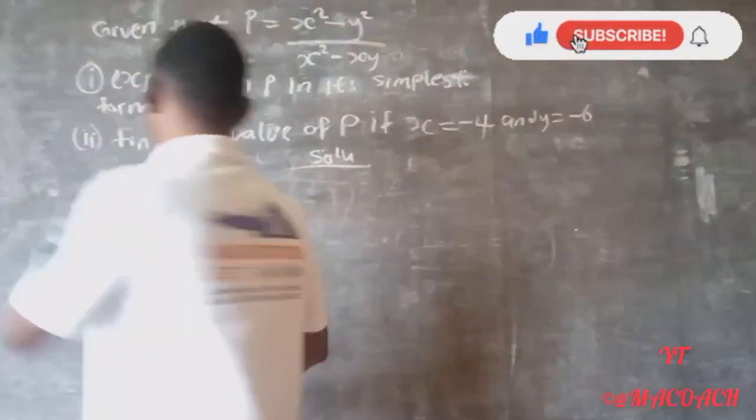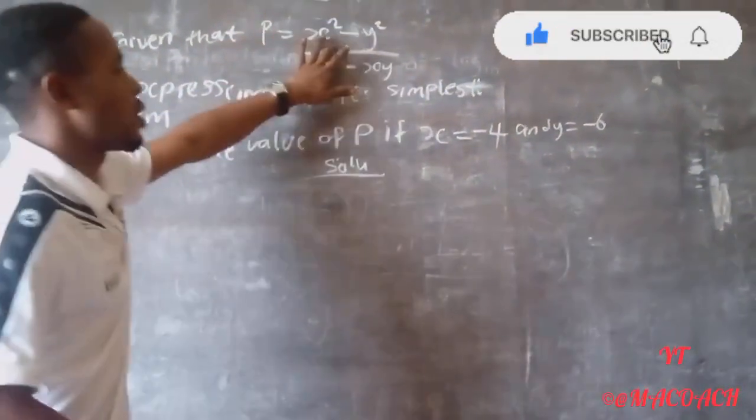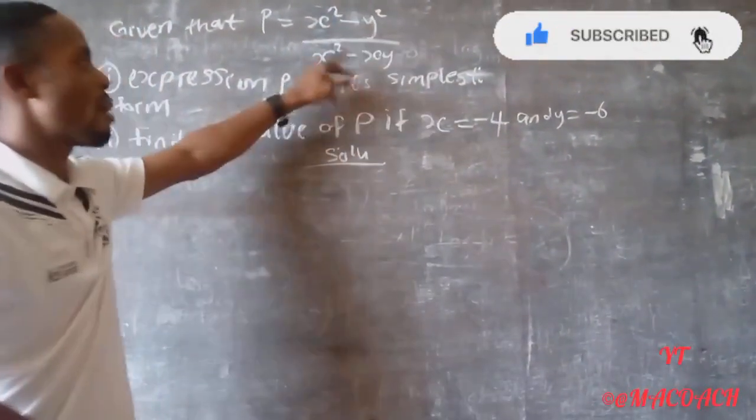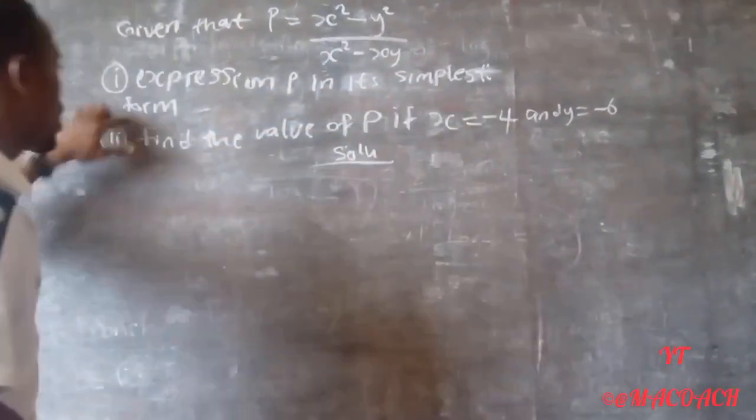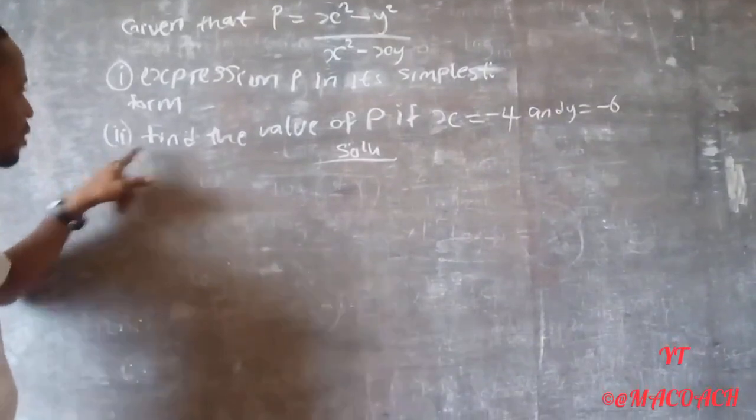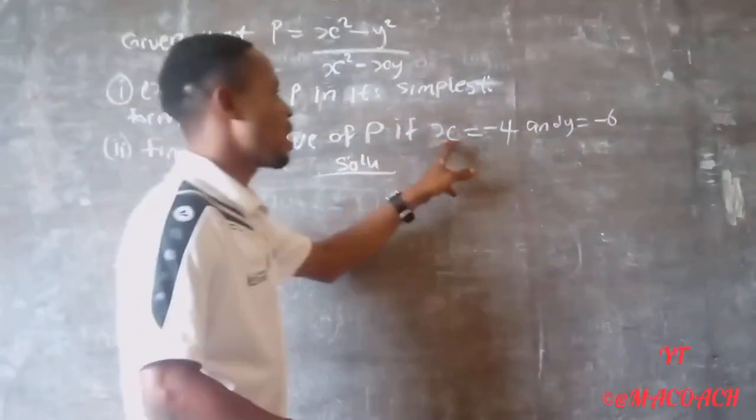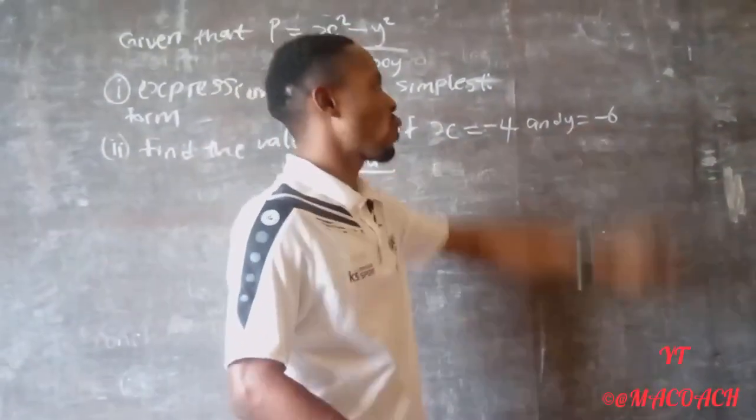This is the question here. Given that P equals S squared minus Y squared divided by S squared minus SY. Part one: express P in its simplest form. Part two: find the value of P if S equals minus 4 and Y equals minus 6.